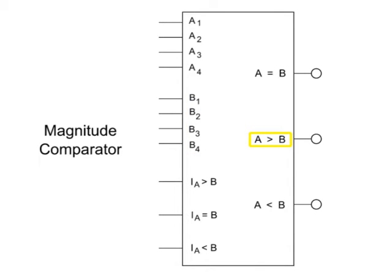If A is larger than B, the A is greater than B output is activated. If B is larger than A, the A is less than B output is activated. If A is equal to B, the A is equal to B output is activated.